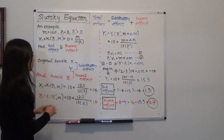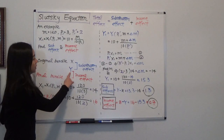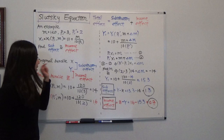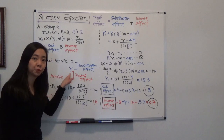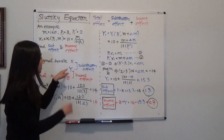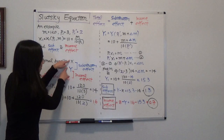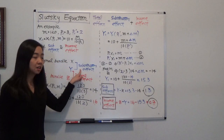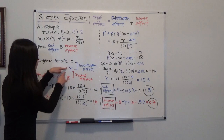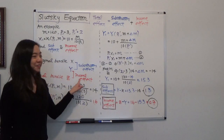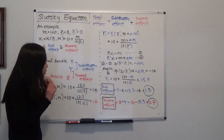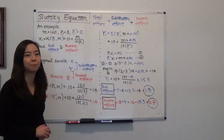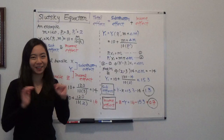There is a bundle in between — we call that bundle Y. As long as you can find bundle Y, the difference between X and Y will be the substitution effect, and the difference between Y and Z will be the income effect. So our goal is to find bundle Y, and then we will be able to know everything.